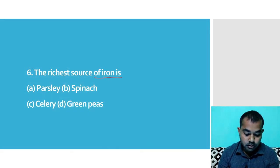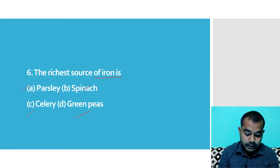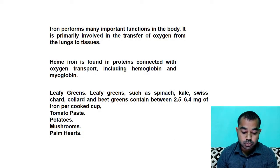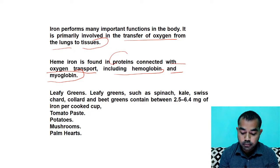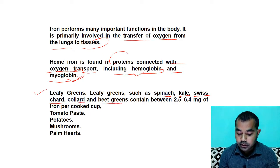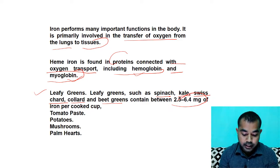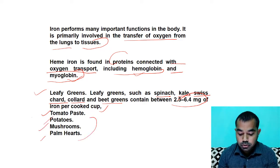The sixth question: what is the rich source of iron? Options are Pylose, spinach, celery, and green peas. The right answer is spinach. Iron helps in the transfer of oxygen from the lungs to tissue, and is found in proteins connected with oxygen transport including hemoglobin and myoglobin. Leafy green vegetables rich in iron include spinach, kale, Swiss chard, collard, and beet greens, which contain about 2.5 to 6.5 mg of iron per cooked cup. Apart from that, tomato paste, potato, mushroom, and palm heart are also rich sources of iron.